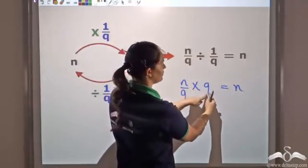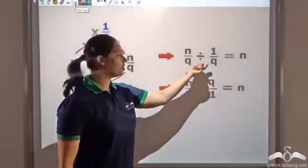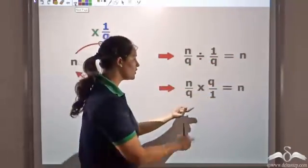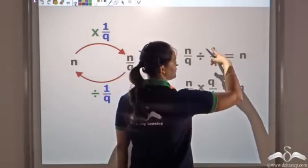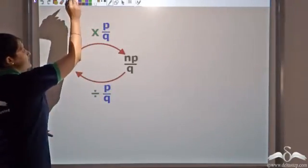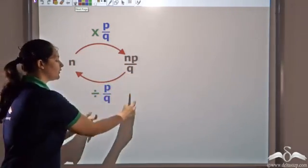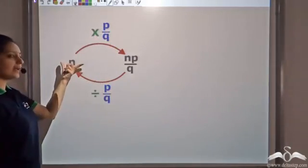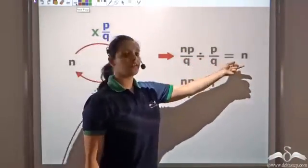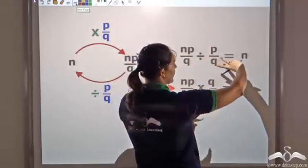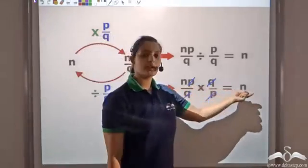Let's take another example. If you have n, multiply by p by q, you get np by q. Dividing by the same number p by q gives back n. So np by q divided by p by q gives n, which is the same as multiplying by the reciprocal q by p — the q's cancel and the p's cancel, leaving n. So dividing two rational numbers is converted to multiplication by taking the reciprocal of the second term.